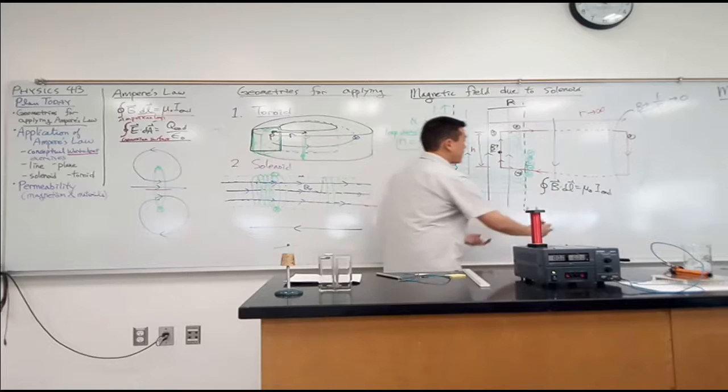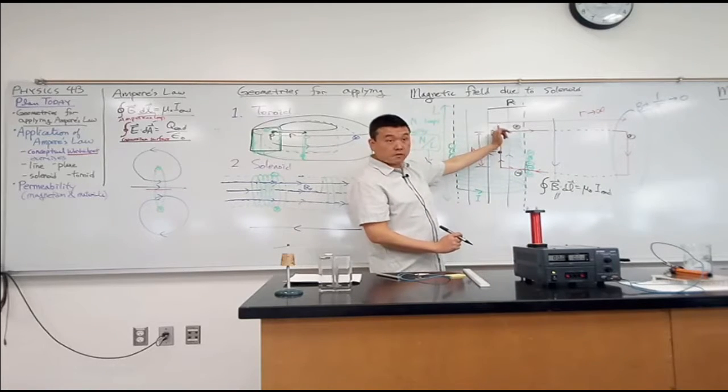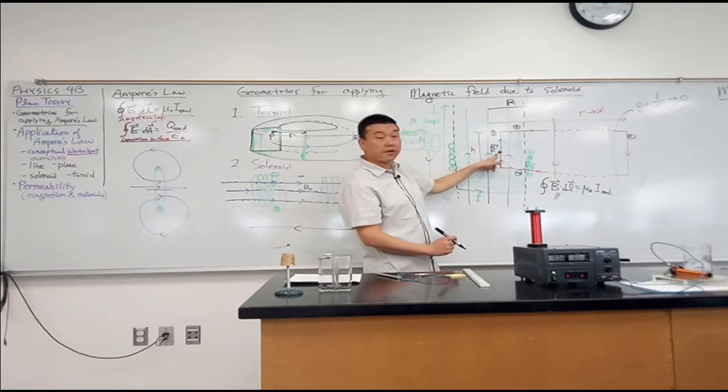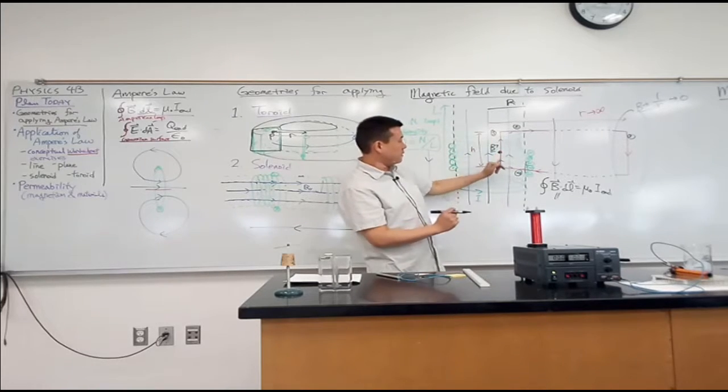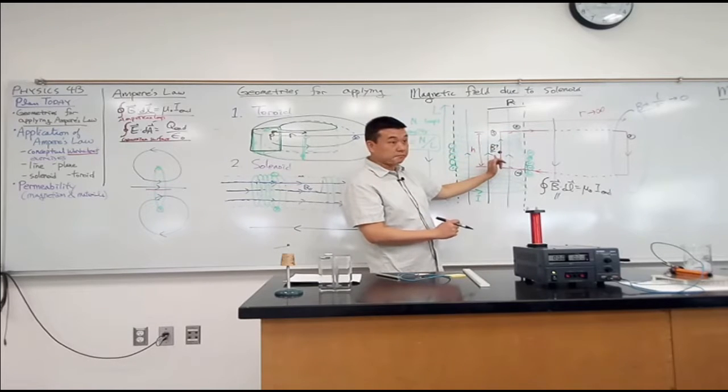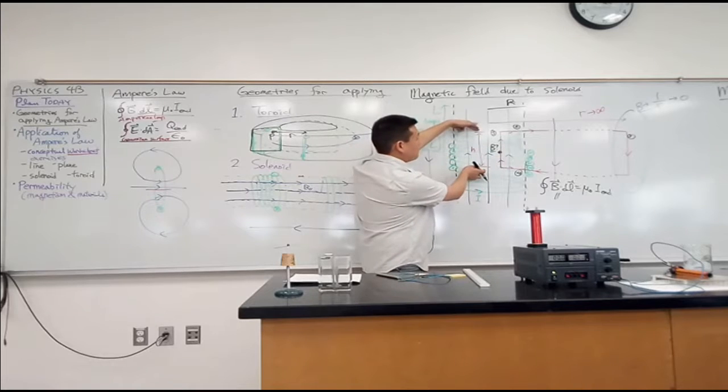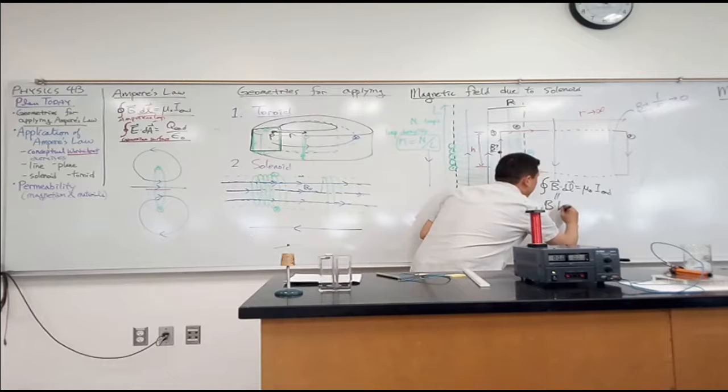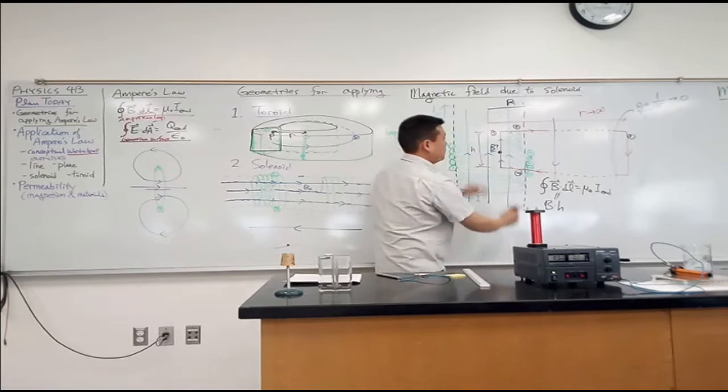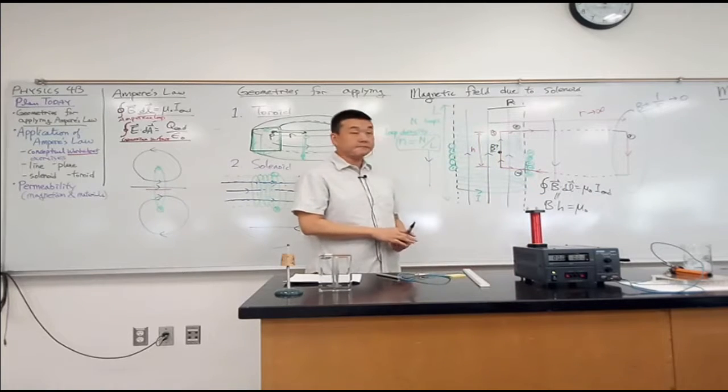So this integral just comes down to a line integral over segment 1, which would be the magnetic field that we are trying to find. And we already argued that it's uniform along this distance, right? Yes? So magnetic field we are trying to find times the height. So it would be B times the height of this loop. That's equal to mu naught times how much current am I enclosing?